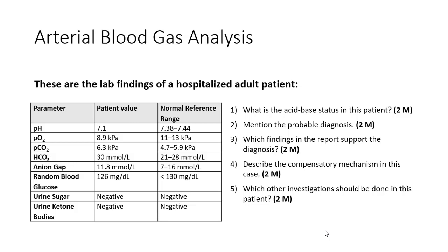In this case, these are the lab findings of a hospitalized patient. The first question is: what is the acid-base status of the patient? We look for pH first. pH is 7.1, which is lower than the normal range, so this should be acidosis. For the probable diagnosis, we go to the remaining parameters: PO2, PCO2, and bicarbonate. If PO2 is less than the normal reference range, it means there is high CO2.